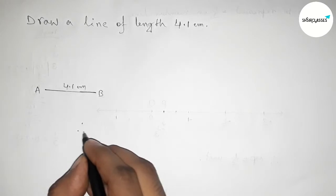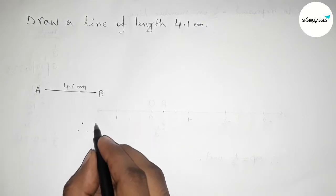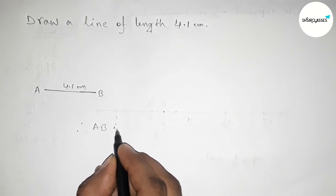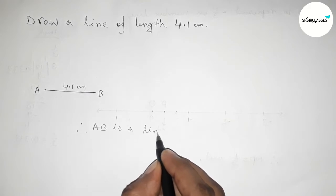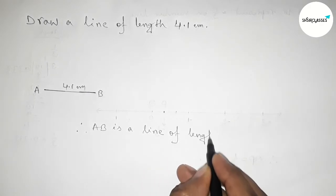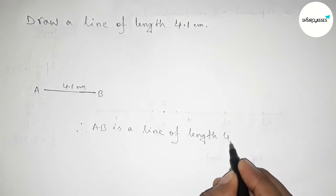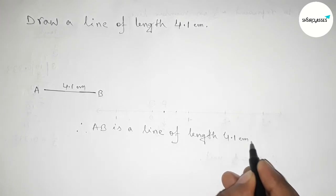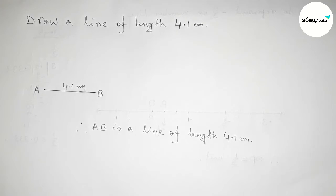Therefore, here AB is a line of length 4.1 centimeters. And by this way you can draw a line of length 4.1 centimeters. So that's all. Thanks for watching. If this video is helpful to you, then please share it.